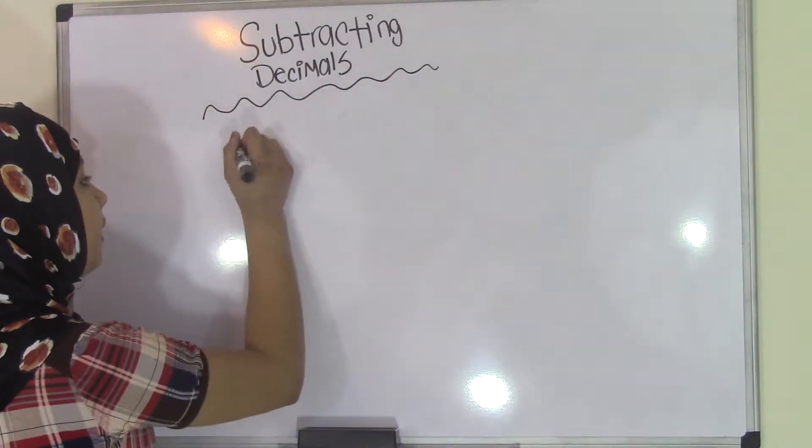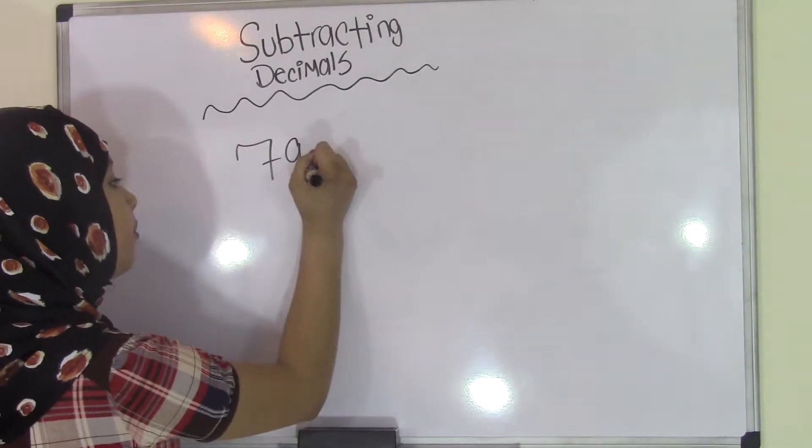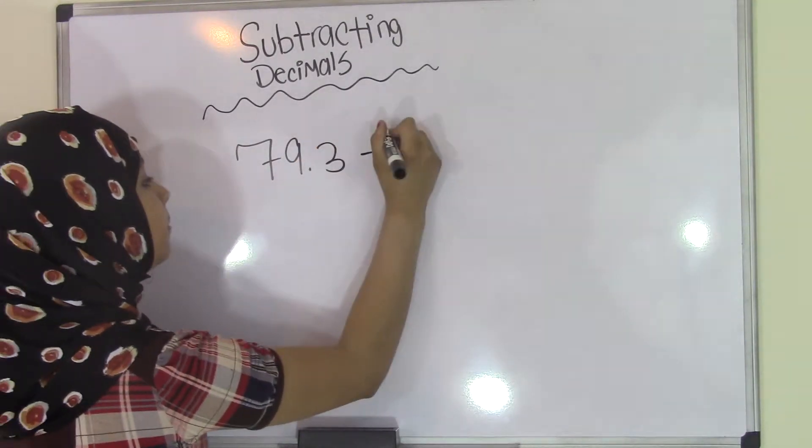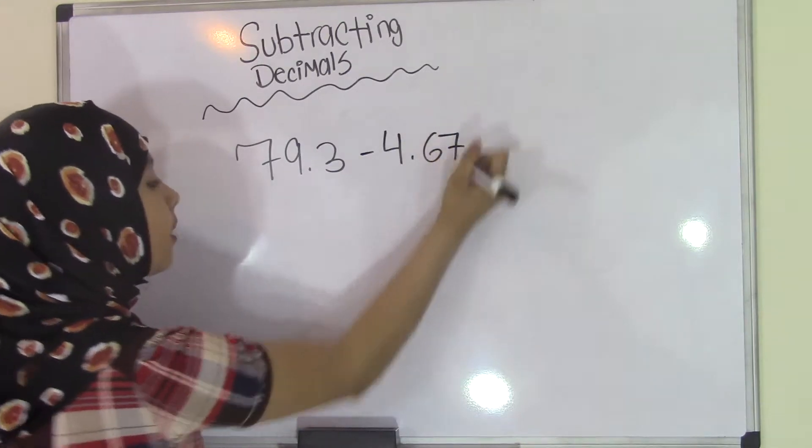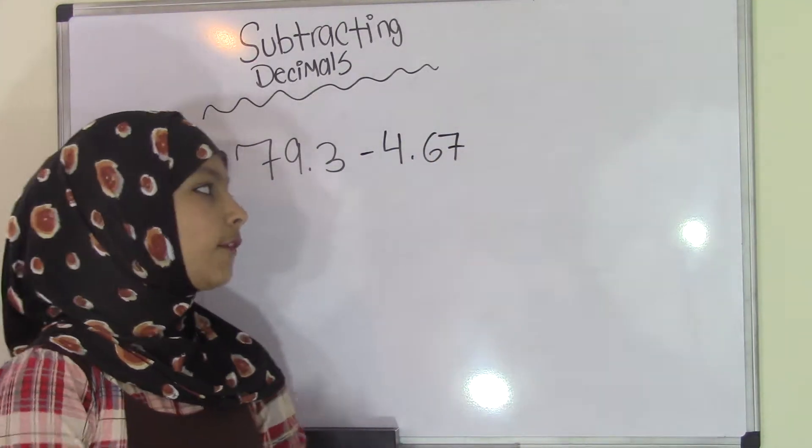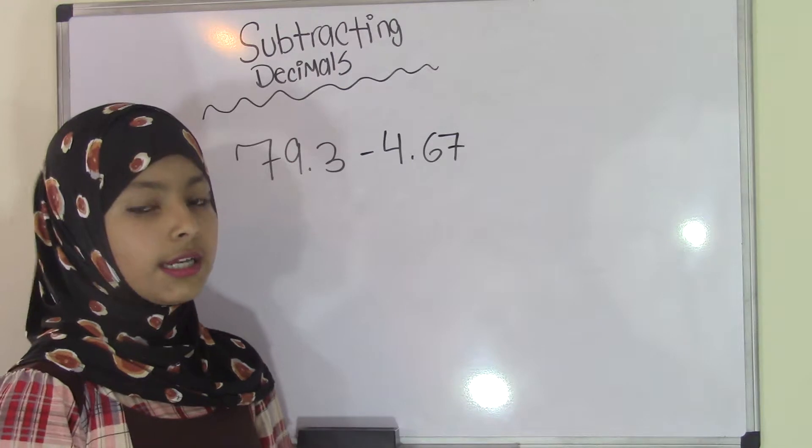So, for example, if we have 79.3 subtracted by 4.67, the first thing you do is you have to put this in vertical form and align the decimals.